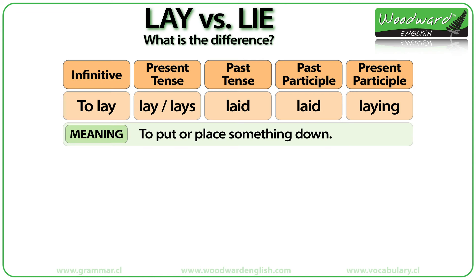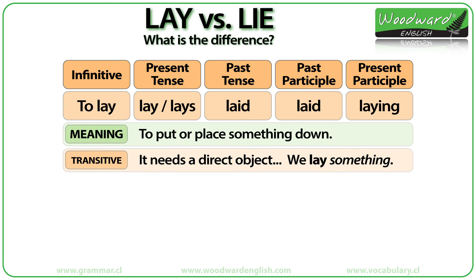LAY. Here is the conjugation of the verb TO LAY. LAY means to put or place something down. LAY is a transitive verb. This means it has a direct object after it — we lay something.